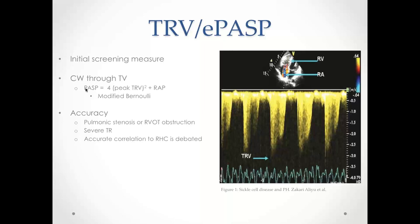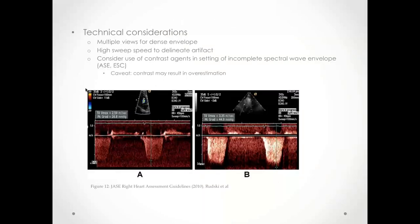The accuracy of these measurements is debated in studies correlating estimated PASP to right heart cath measurements. An important technical consideration is to try to obtain the densest CW envelope possible through the tricuspid valve, doing this from multiple views — sometimes including modified apical views or low RV inflow views. Taking the time to optimize acquisition is important.